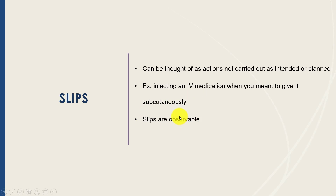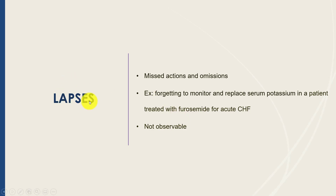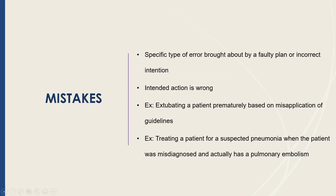Lapses are missed actions or omissions — things you should have done but did not do. For example, forgetting to follow up on a serum potassium in a patient treated with furosemide for acute congestive heart failure. You can't necessarily observe a lapse because you can't see that someone forgot to do something. In slips and lapses, the intended action was correct; in a slip the person did the wrong thing by accident, and in a lapse they forgot to do what they intended.